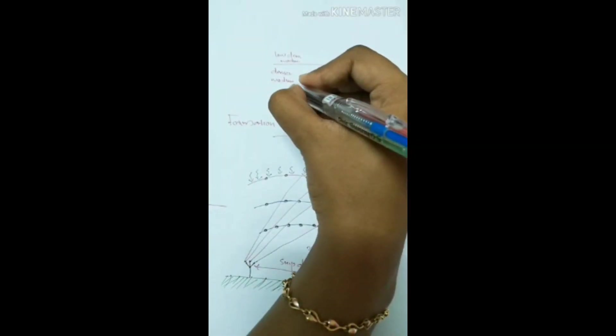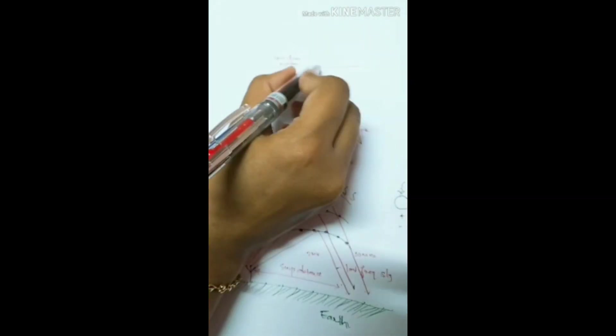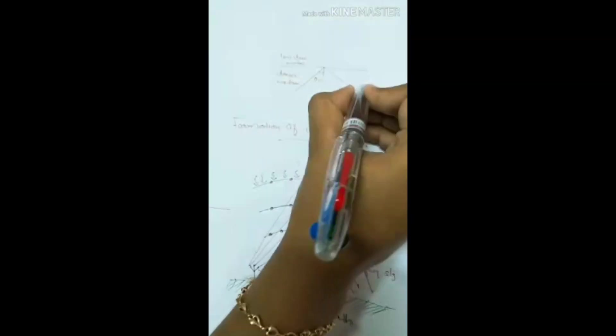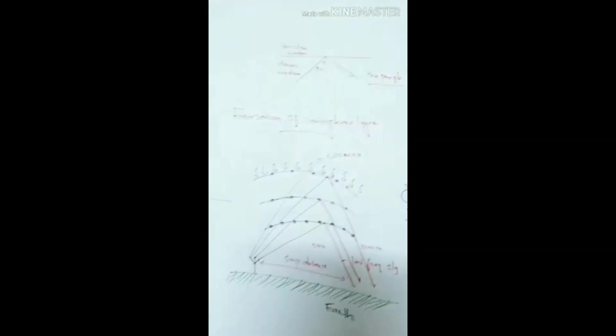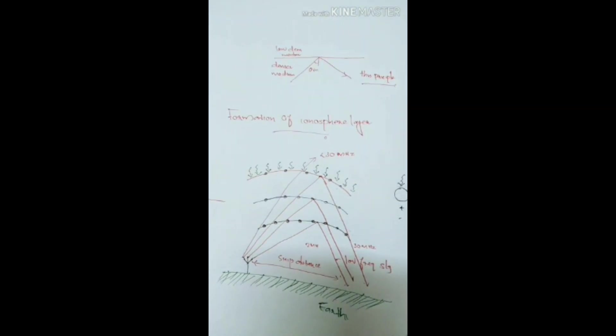When a signal is sent, if it has an angle greater than the critical angle, then it will be reflected back to the same medium. This principle is used for skyway propagation. This is all about skyway propagation.